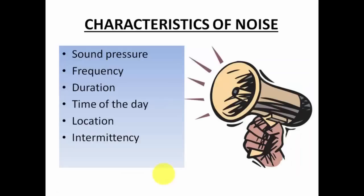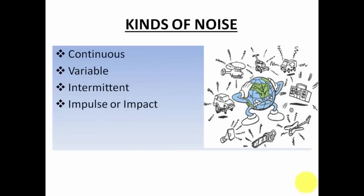Now, what are the characteristics of noise? Noise may have various characteristics — and sound will also have these characteristics. For example, we have sound pressure, then frequency. Frequency is the rate at which sound waves are produced — the number of cycles of high and low pressure regions. Next is duration of the noise or sound, then time of the day, location, and intermittency. These are the various characteristics of noise and sound.